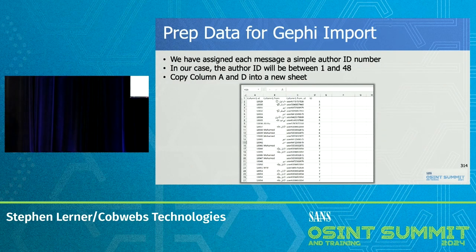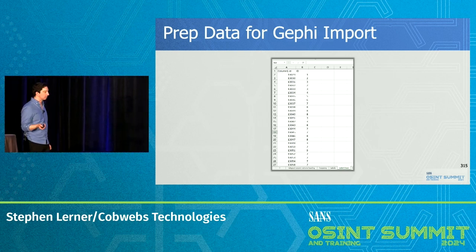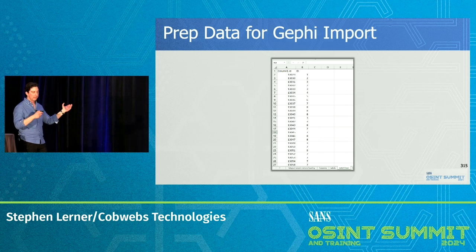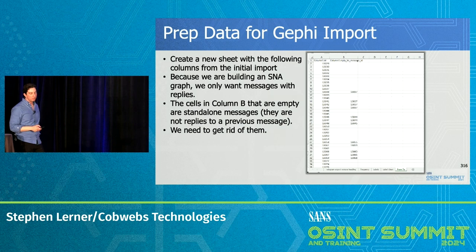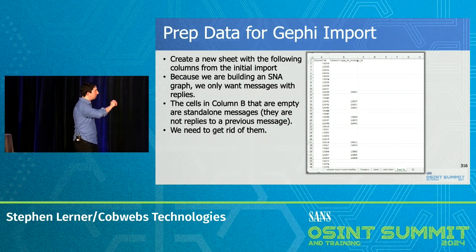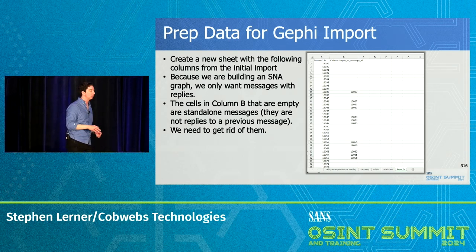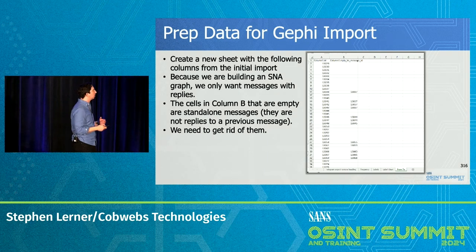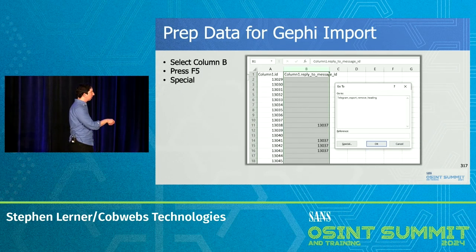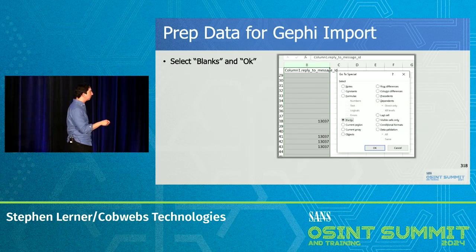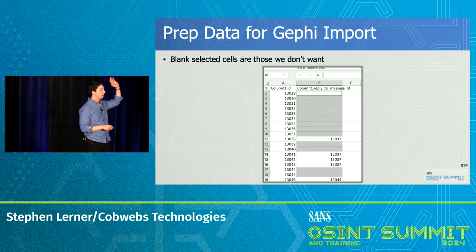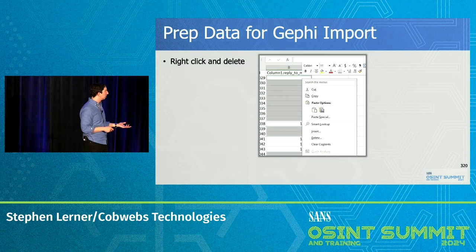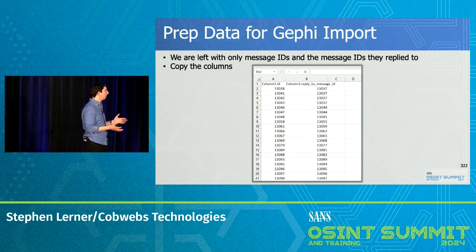Now we have this new clean sheet. Copy columns A and D into a new sheet — that's the 'labels' sheet, i.e., the label of each message author. Then into another sheet, copy the message ID and who they replied to. There are some messages that did not respond to anybody, so we need to get rid of those: click on column B, press F5, Special, select Blanks, OK. That selects all blank cells in the column — right-click, Delete, and delete the entire row. We're left just with people that wrote messages and who they responded to, not standalone messages.